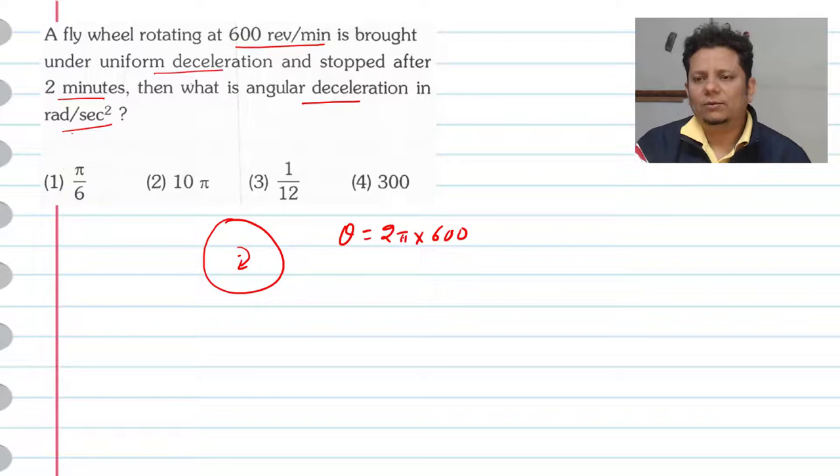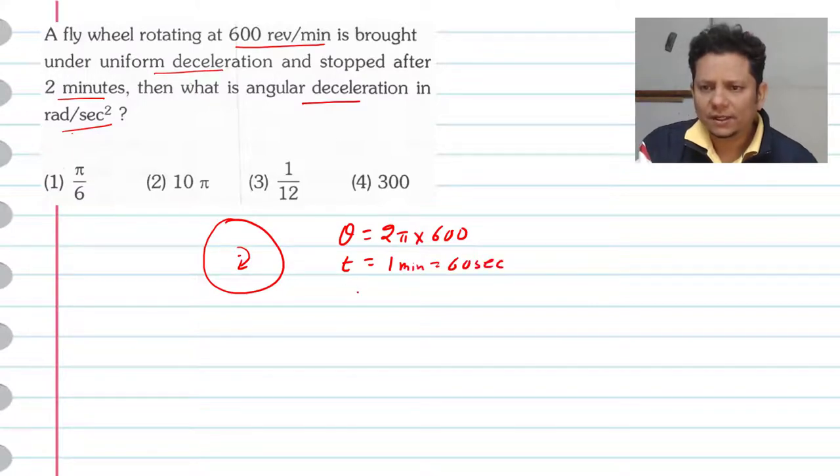Then you have to convert to angular displacement and time, that is 1 minute equals 60 seconds. So omega, which we can call theta divided by t, we can call it omega naught.